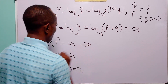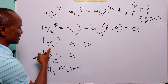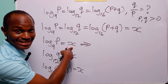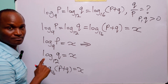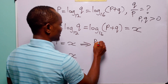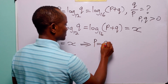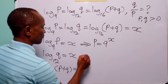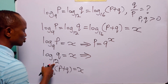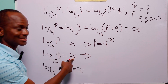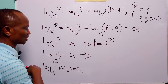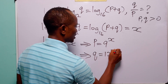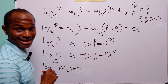From here we have that 9 to the power X is equal to P — that is, P is equal to 9 to the power X. From here, we have that 12 to the power X is equal to Q — that is, Q is equal to 12 to the power X.